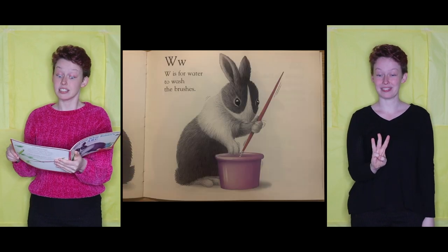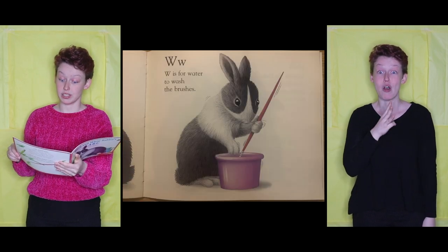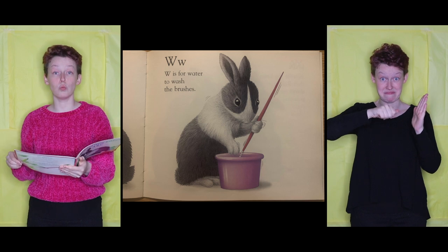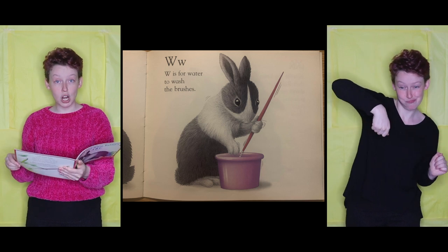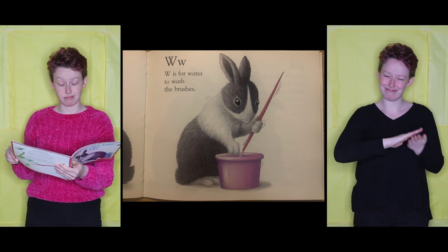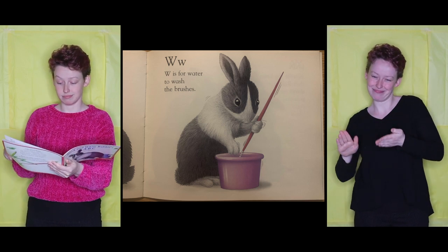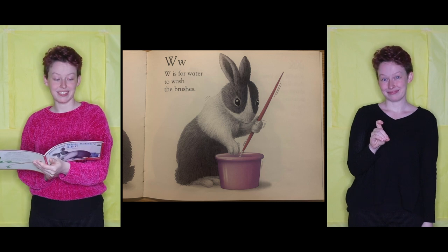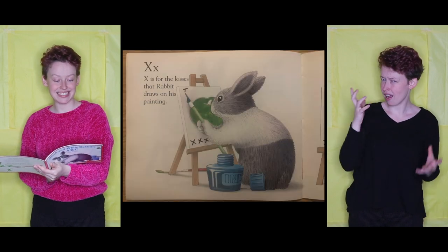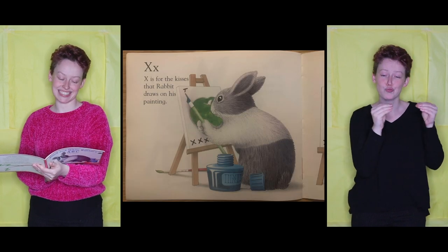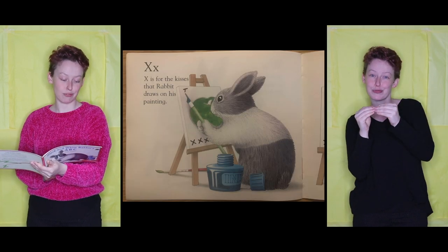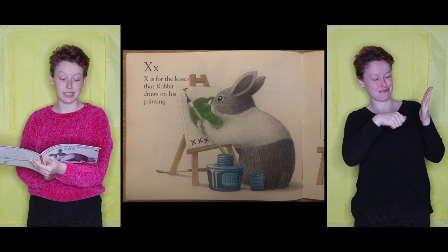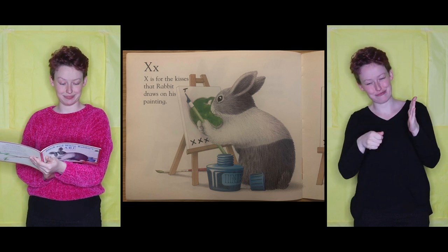W is for Water, to Wash the Brushes. X is for the Kisses that Rabbit draws on his painting.